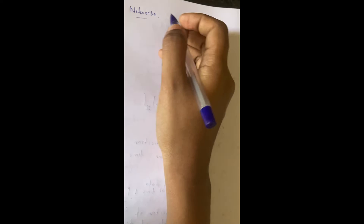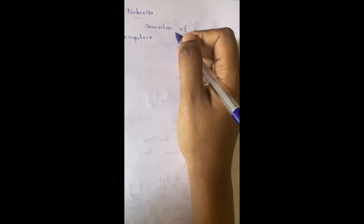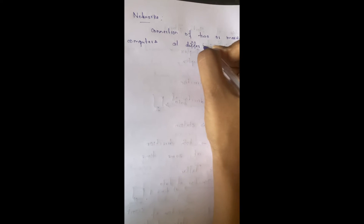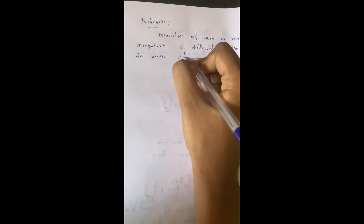Next we are going to see the concept of networks. A network is a connection of two or more computers or some other devices at different locations. From some other location we can connect different computers to share information. If you are having two or more devices, we can connect those devices through networks to share our information.